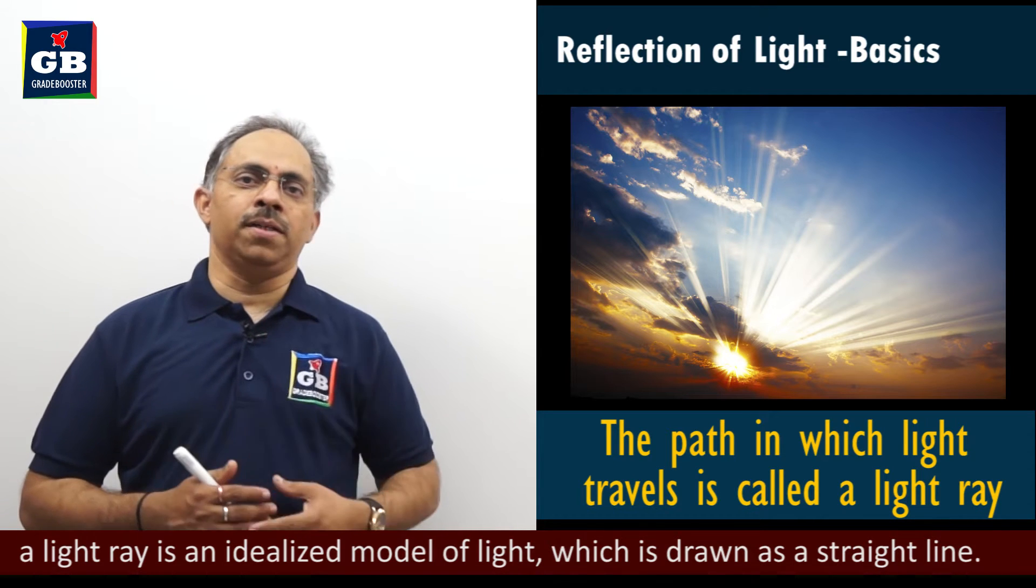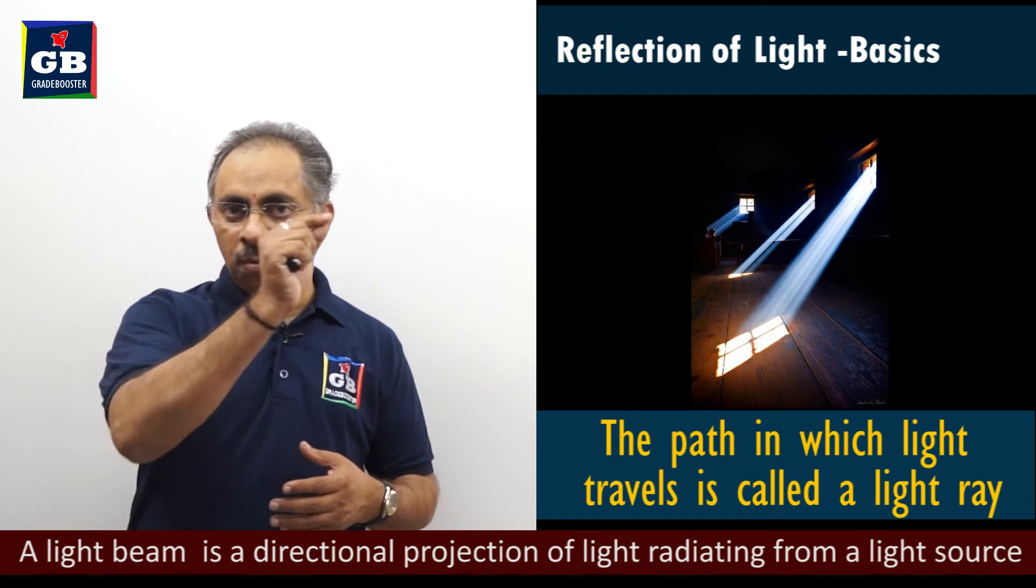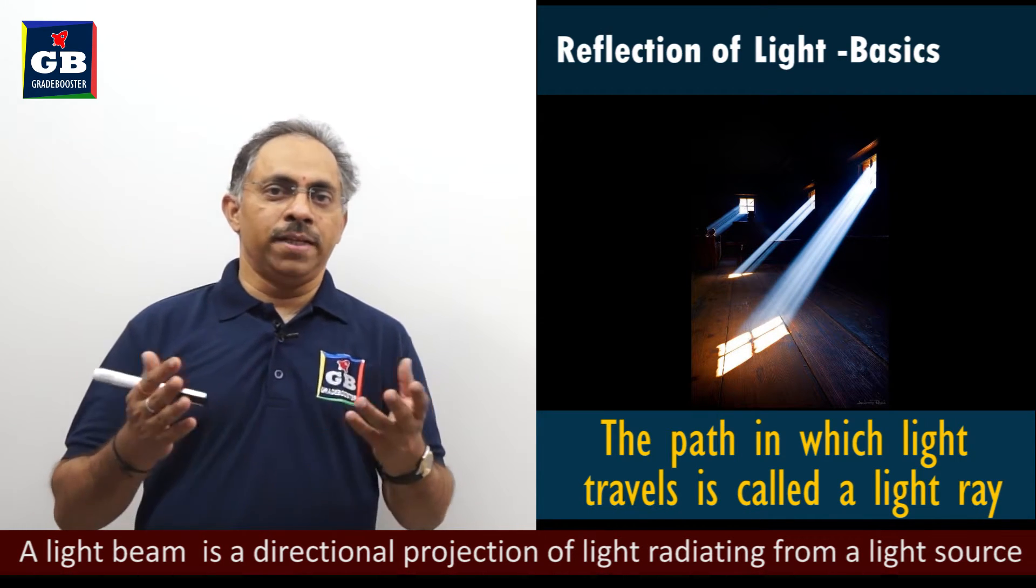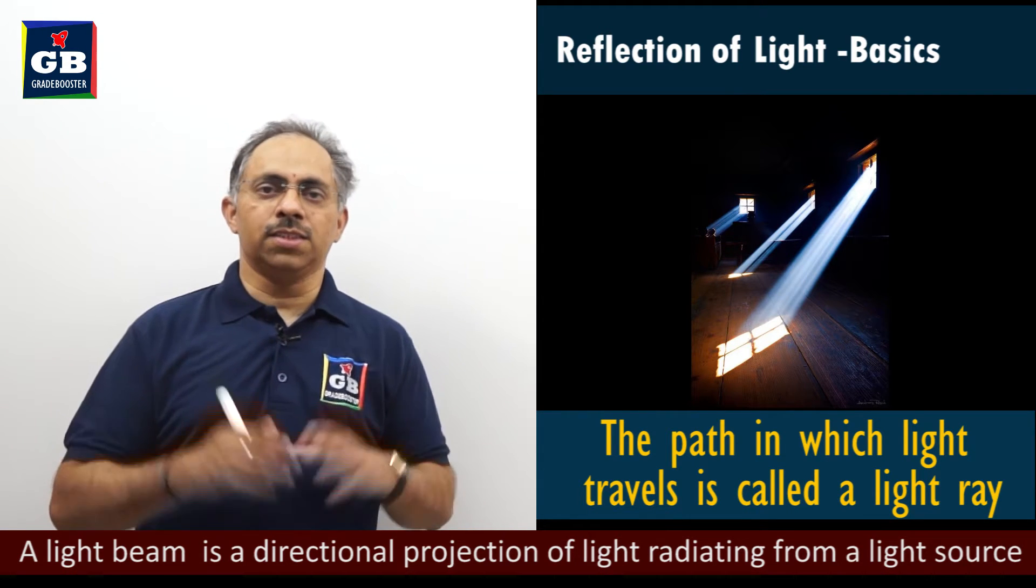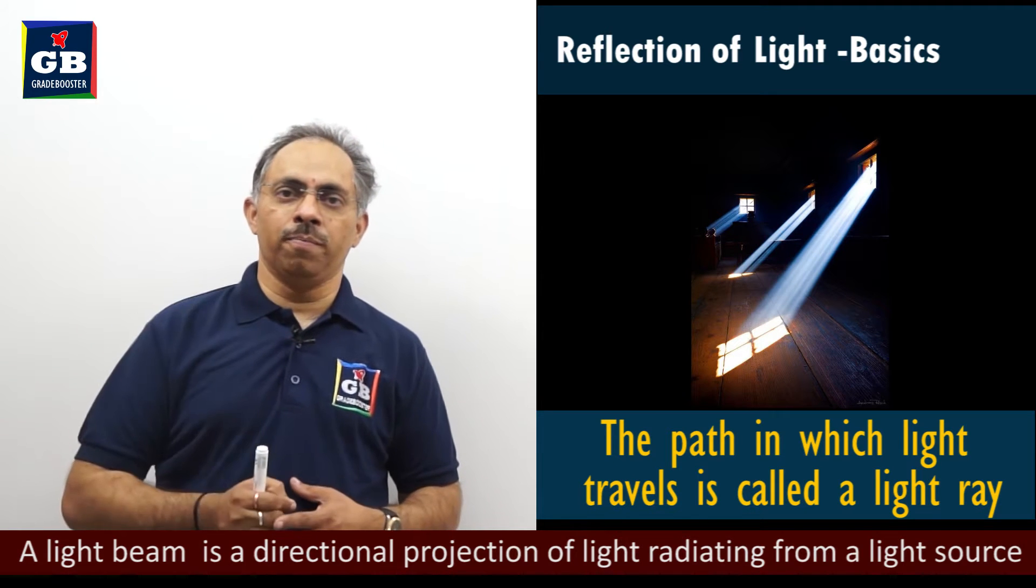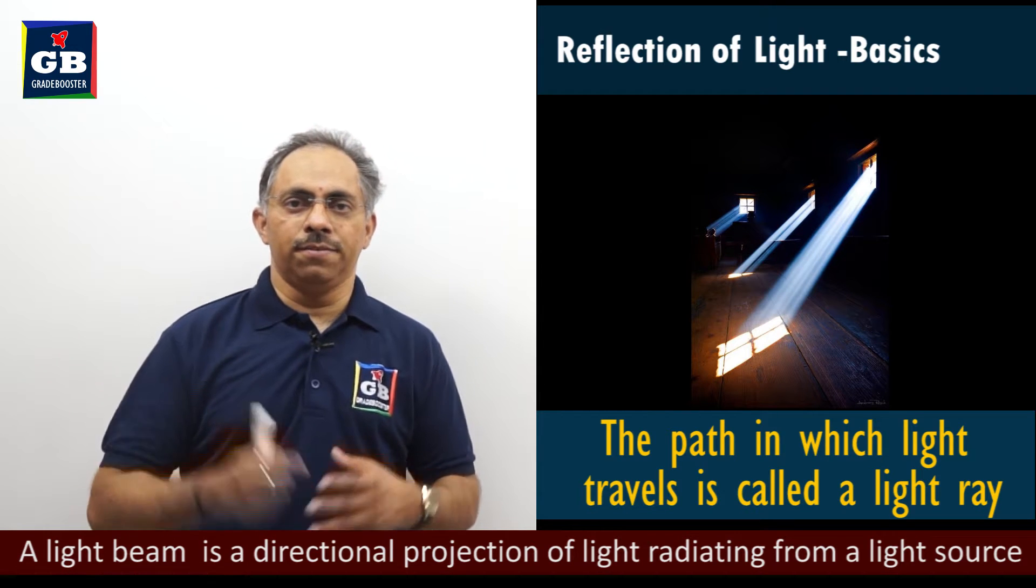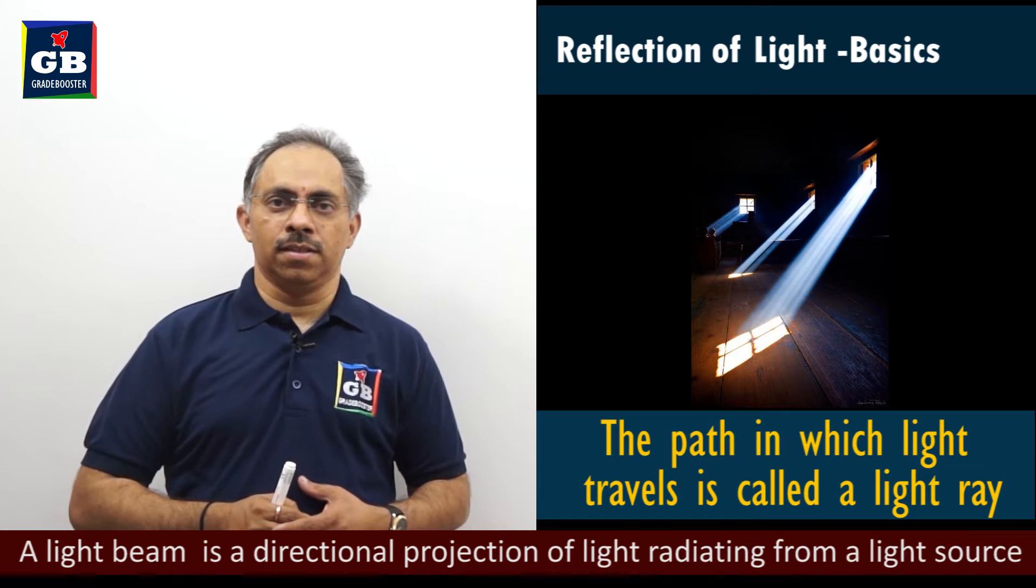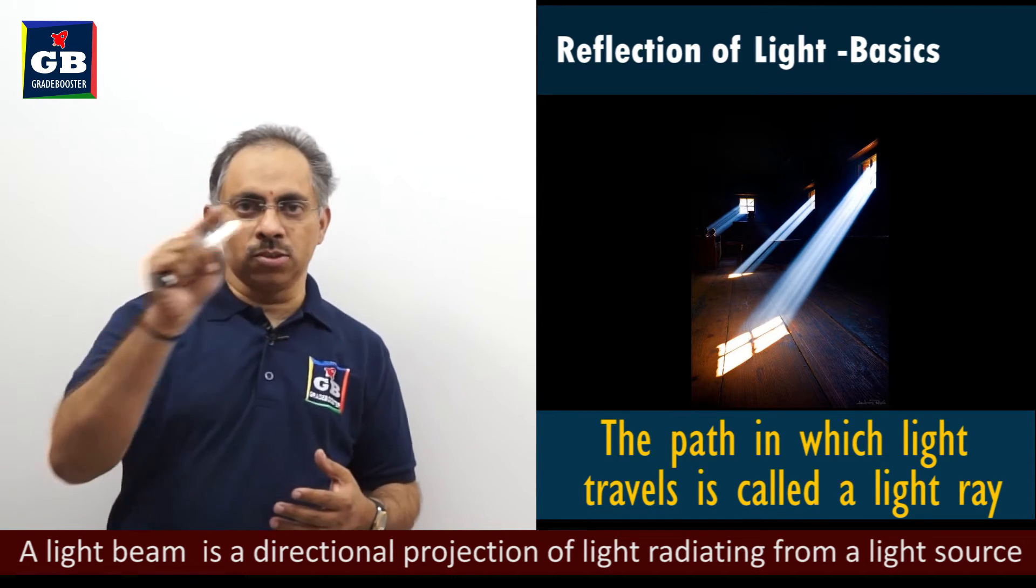It is a quite common phenomenon that we will be able to observe small streaks of light when maybe in the winter season, early in the morning. Just we open the windows or if there is a small hole in the window through which light is entering into a dark room, we will be able to see that streak of light. The streak of light helps us to see that light is going in the form of rays.